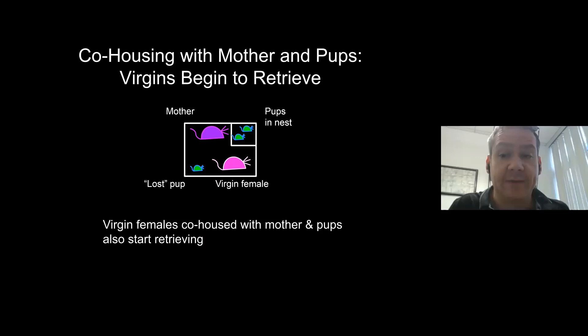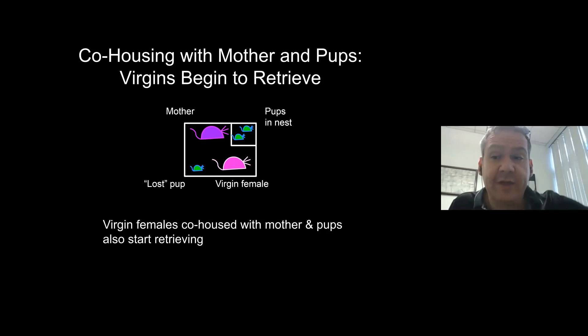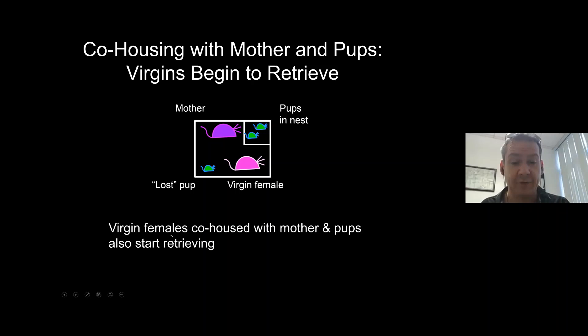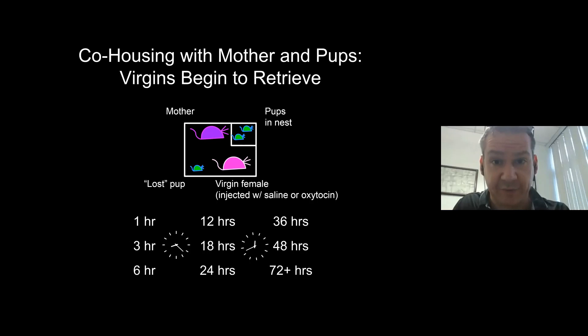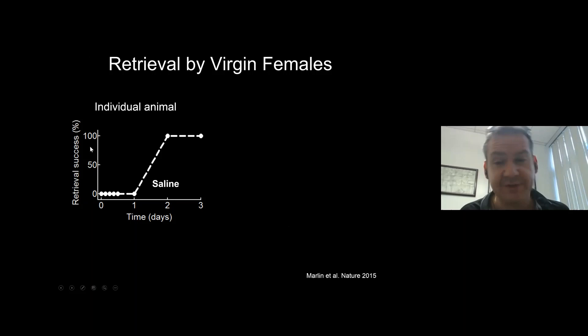We've known for a while that exposure to pups will induce maternal behaviors in virgin females, with the exception of lactation. The first experiments we did involved taking virgin animals, putting them in a cage with a mother and her pups, and then testing the virgin's retrieval after periods of exposure ranging from one hour to three days or longer. Some animals were treated with saline as controls; others were treated with oxytocin, either pharmacologically or using optogenetics.